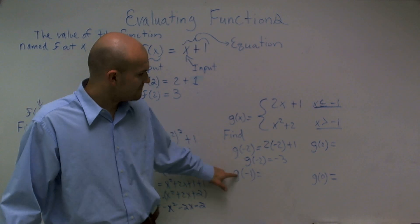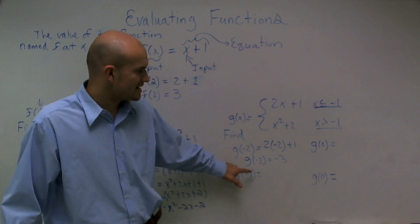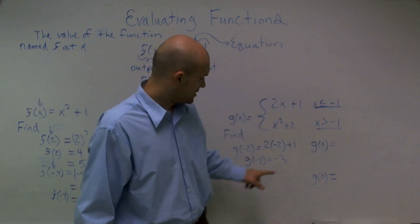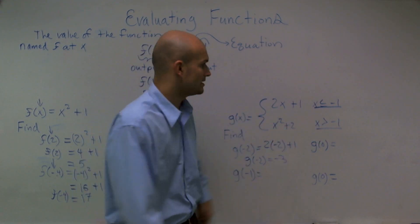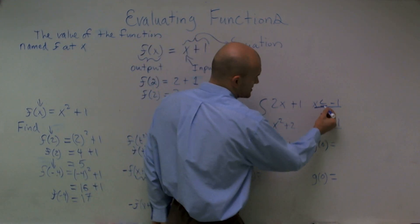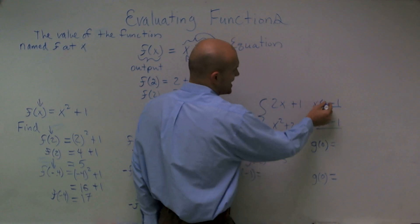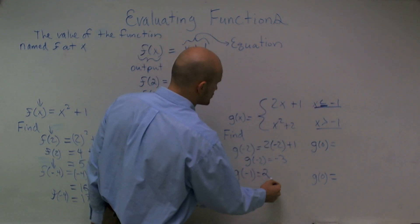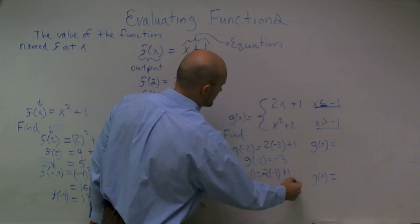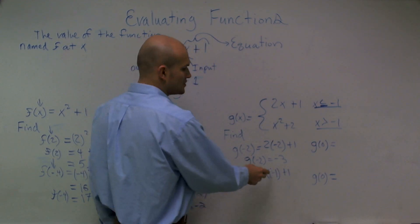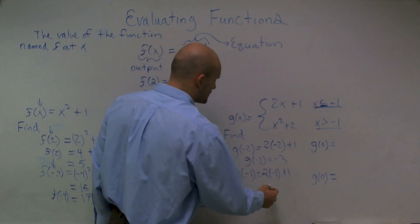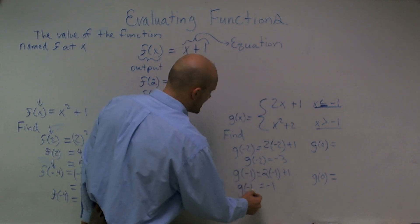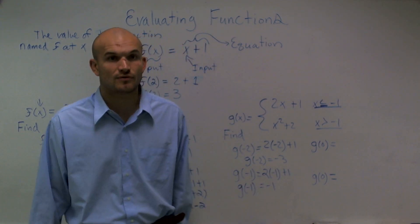For g of negative 1 — what is the value of my function at negative 1? The bottom function says x must be greater than negative 1, and negative 1 is not greater than negative 1. But the top function is less than or equal to negative 1, so I'm going to use the same top function. 2 times negative 1 is negative 2, negative 2 plus 1 is negative 1. So the value of my function g at negative 1 is equal to negative 1.